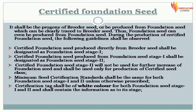Thus Foundation Seed can even be produced from Foundation Seed. During the production of Certified Foundation Seed, the following guidelines shall be observed. Certified Foundation Seed produced directly from Breeder Seed shall be designated as Foundation Seed Stage I. Certified Foundation Seed produced from Foundation Seed Stage I shall be designated as Foundation Seed Stage II. Foundation Seed Stage II will not be used for further increase of Foundation Seed and shall be used only for production of Certified Seed class. Minimum Seed Certification Standards shall be the same for both Foundation Seed Stage I and II unless otherwise prescribed. Certification tag shall be of white color for both Foundation Seed Stage I and II and shall contain information as to its stage.